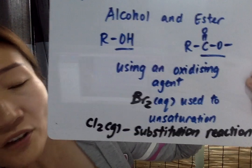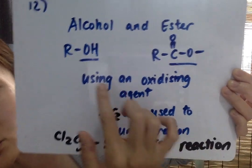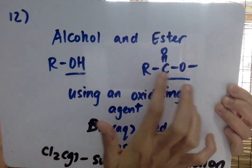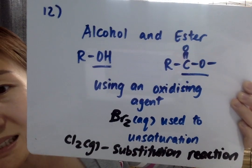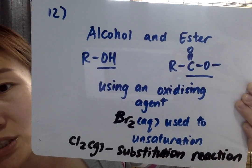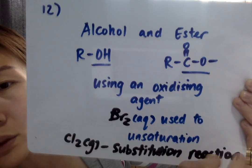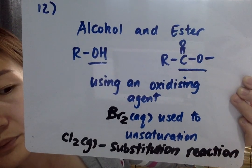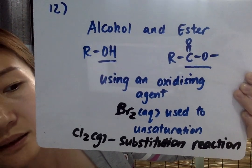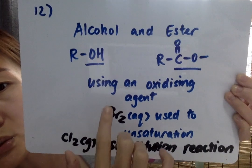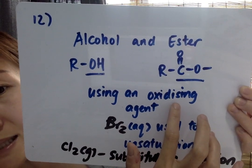Phosphoric acid is also not going to be able to tell these two functional groups apart, because phosphoric acid is used as a catalyst in the hydration reaction between ethene and steam.